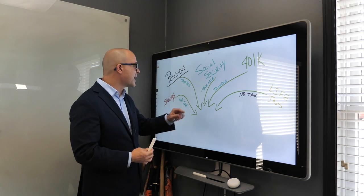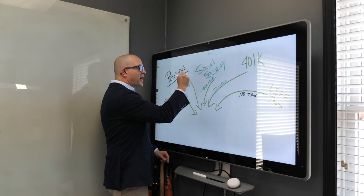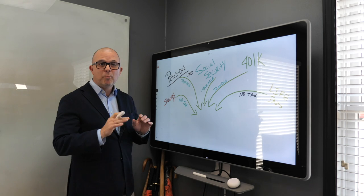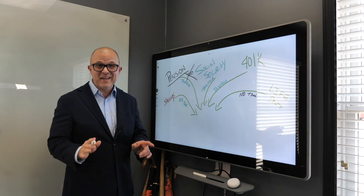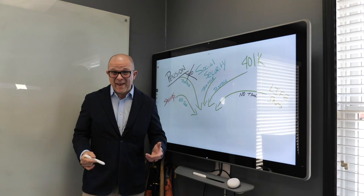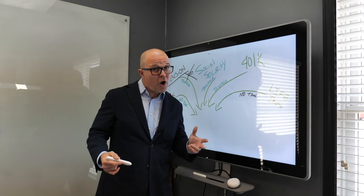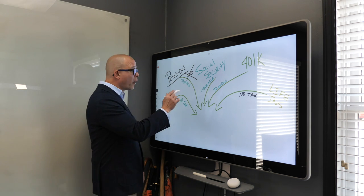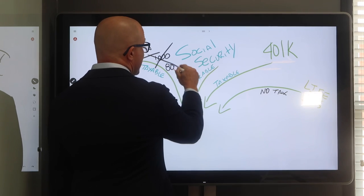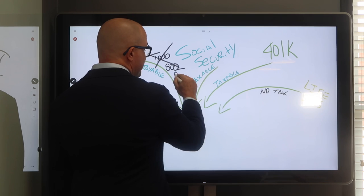If you decide you're going to take a pension option that gives you $1,000 a month, but if something happens to you, your wife gets nothing. That is a big deal. Sometimes people are making decisions like this and they don't even know what they're doing. That's a permanent decision. Or, would you rather take $800, and if something happened to you, your wife gets $800?